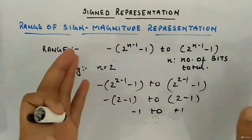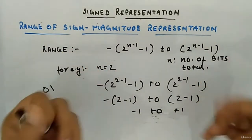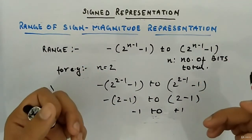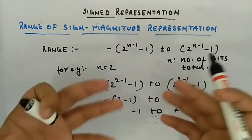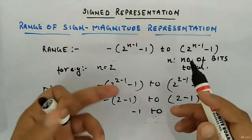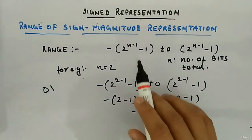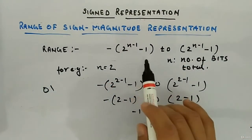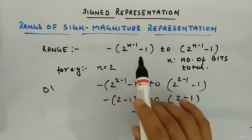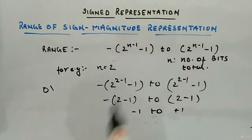Outside this range, you will have invalid numbers, which you won't be able to represent because you are working in binary. So always keep in mind that there is a range associated with sign-magnitude representation.